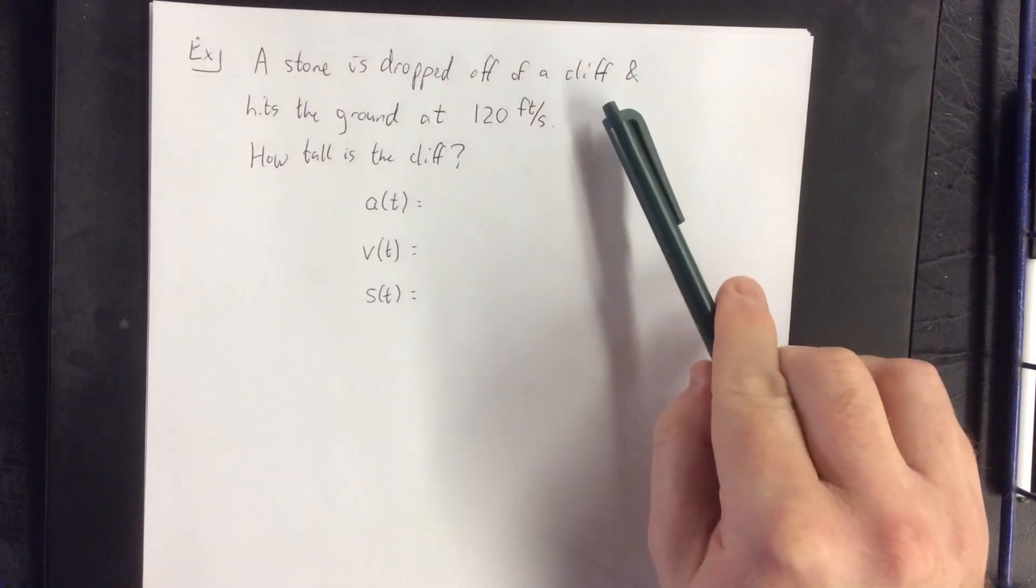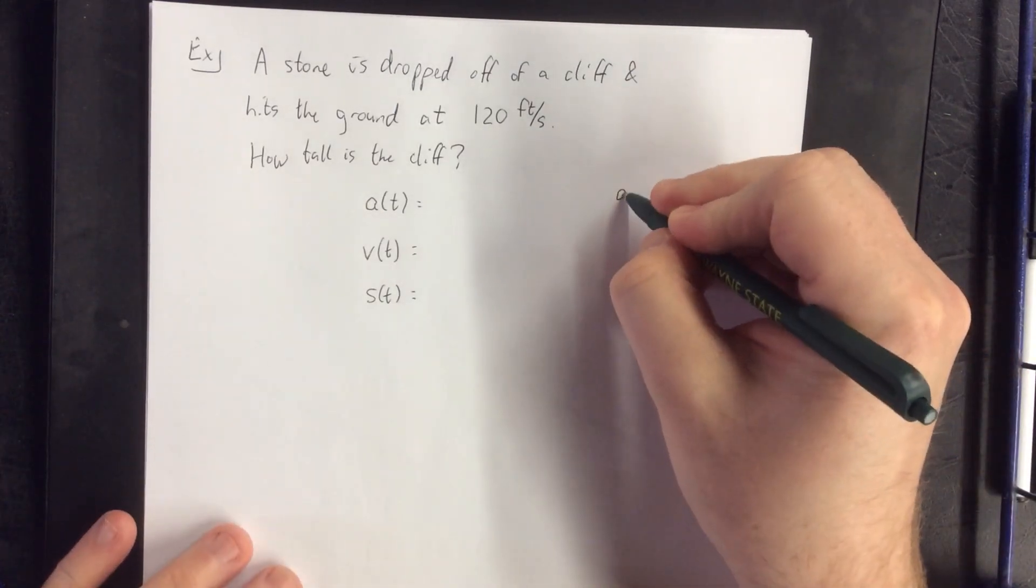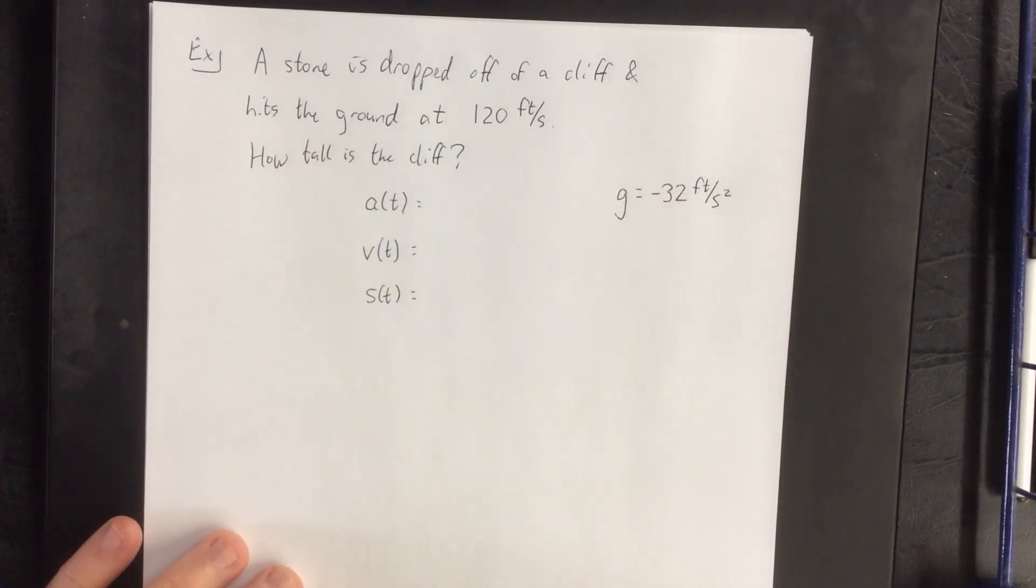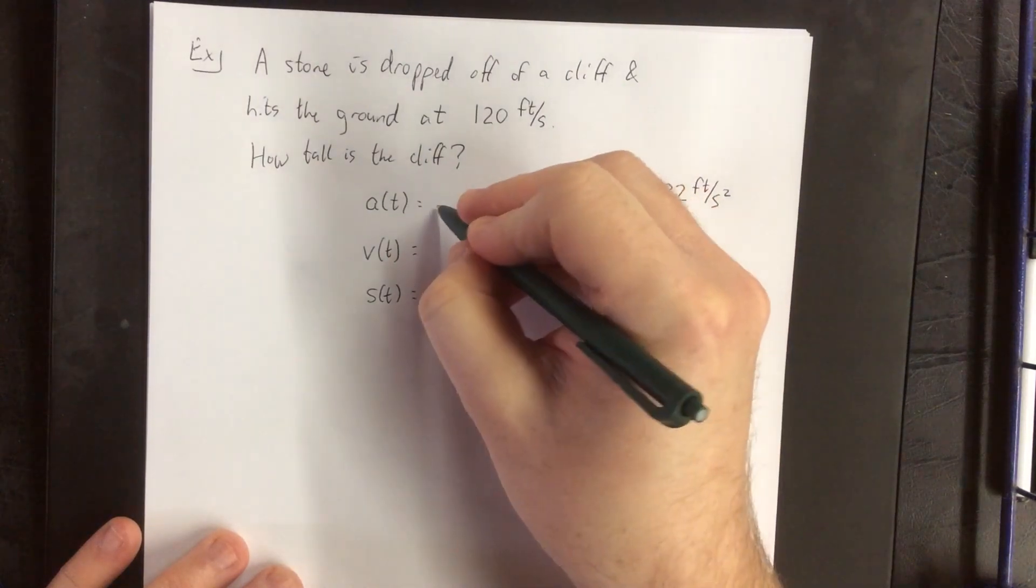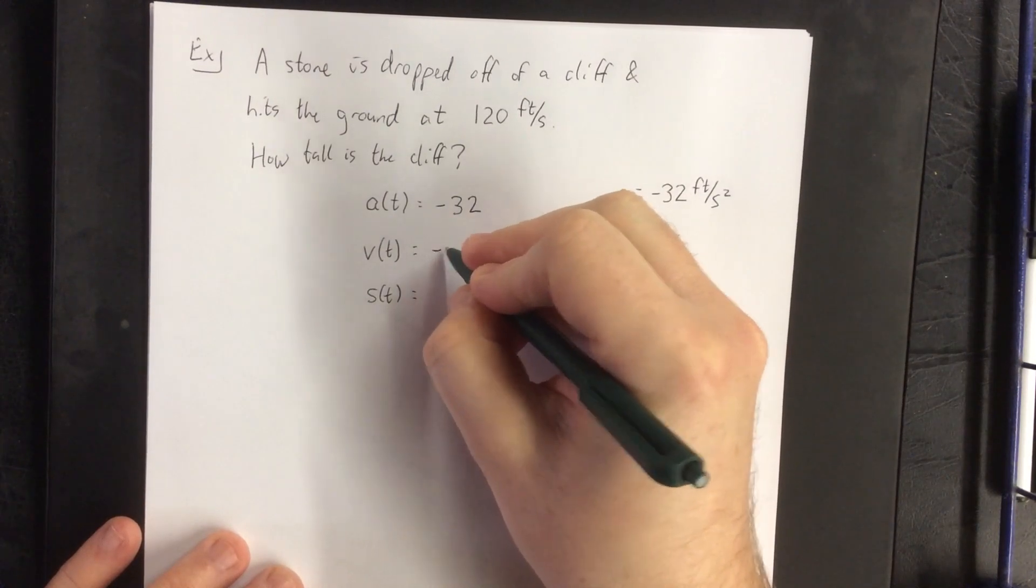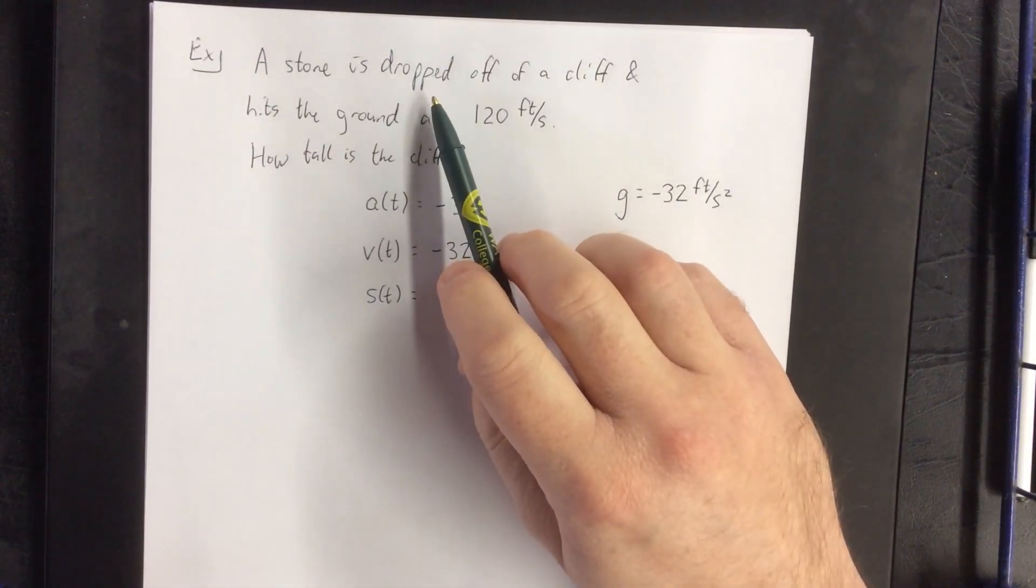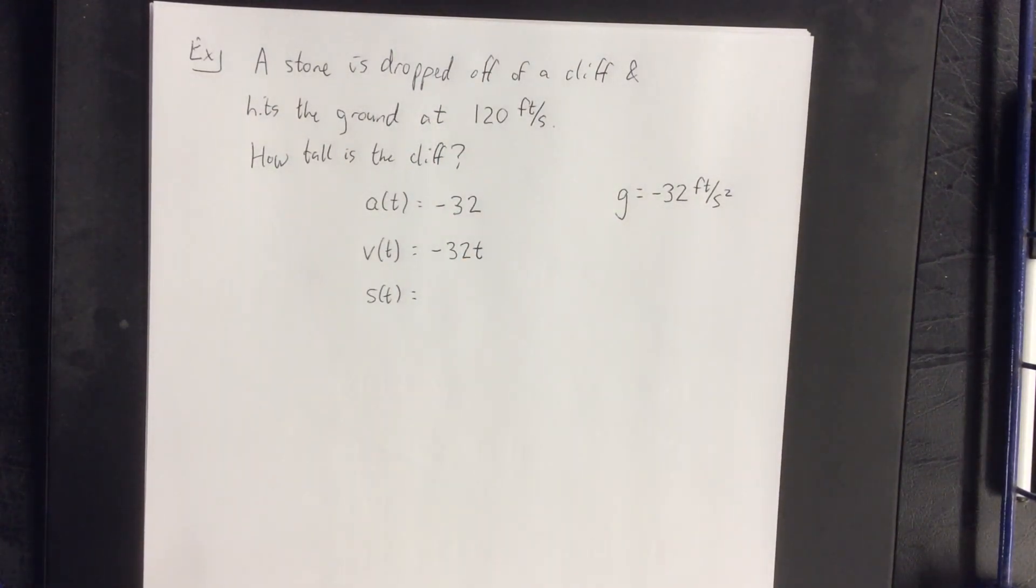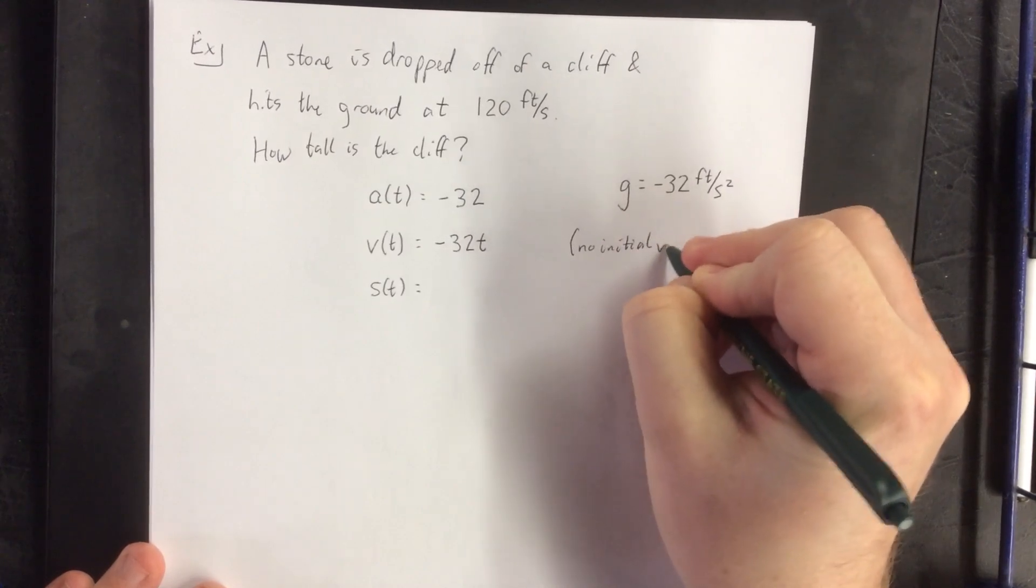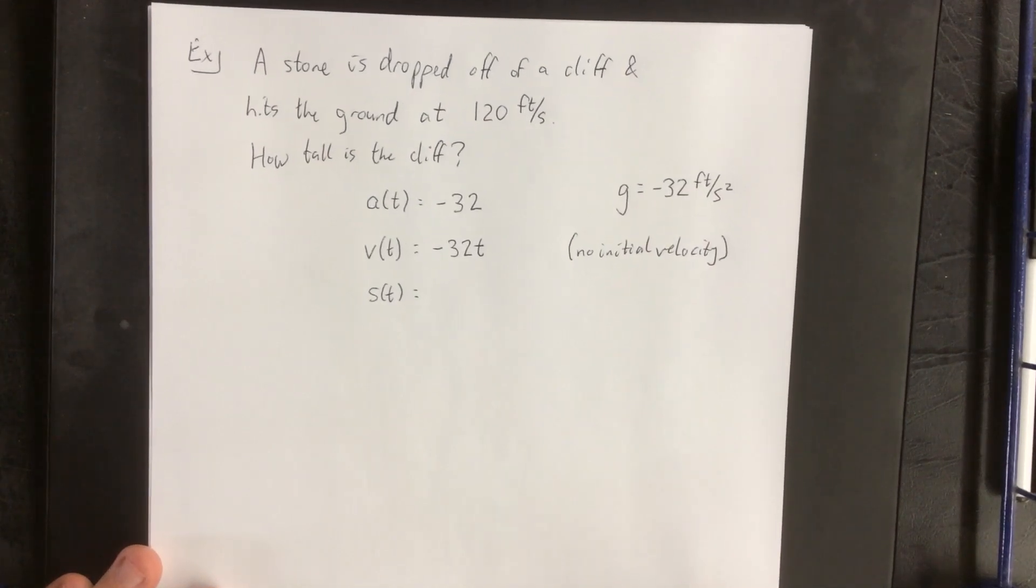Now, I notice that when we were given a velocity, we were given feet per second. Now, because we were given feet per second, we are going to make use of the units, feet per second per second, for our acceleration due to gravity. So the acceleration function is going to be negative 32. Our velocity function is going to be negative 32t plus whatever the initial velocity is. We were told that the stone was dropped. Now, if it's dropped, that means that we were giving it no initial velocity. Whereas if we were told that it was thrown with a certain initial velocity, that would be a different case.